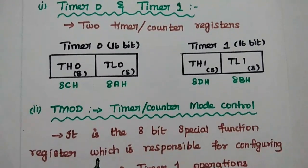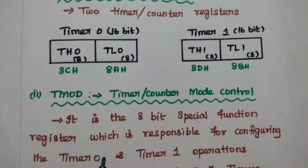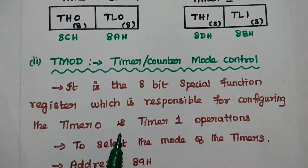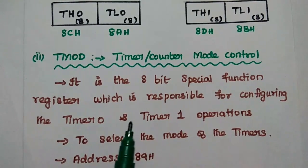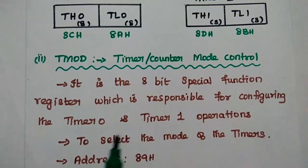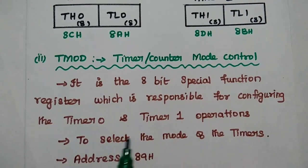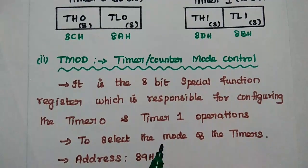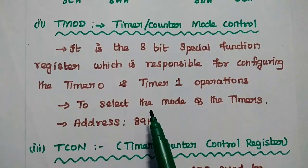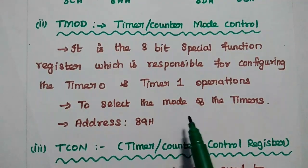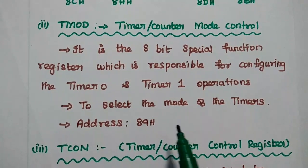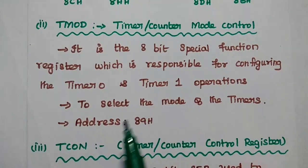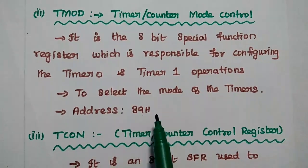The next one is the TMOD register, that is the timer counter mode control register. It is an 8-bit special function register responsible for configuring timer 0 and timer 1 operations and for selecting the mode of the timers. AT51 timers have four types of operating modes, which can be selected using the TMOD register. Its address is 89H.